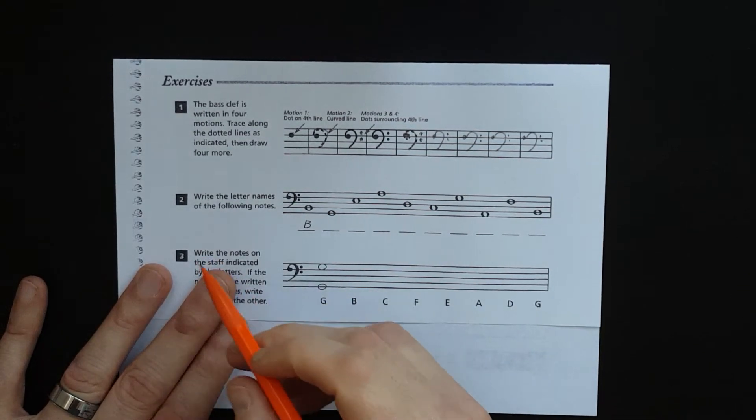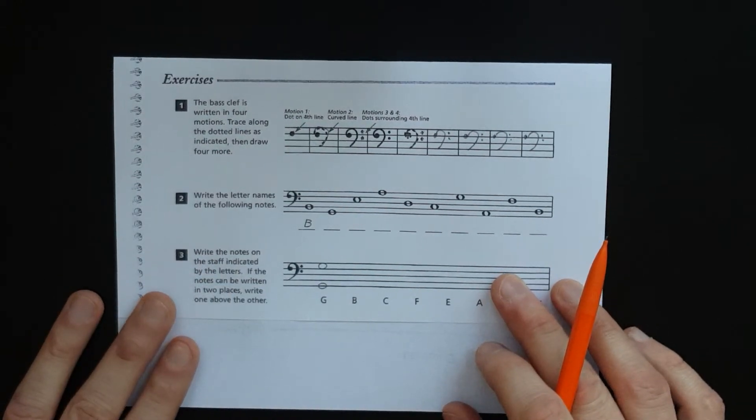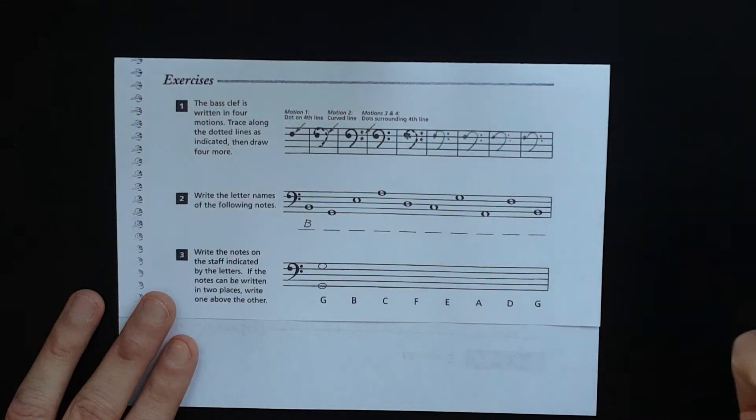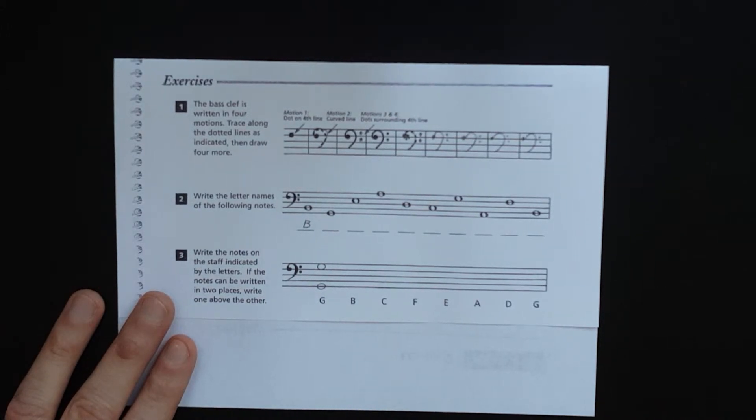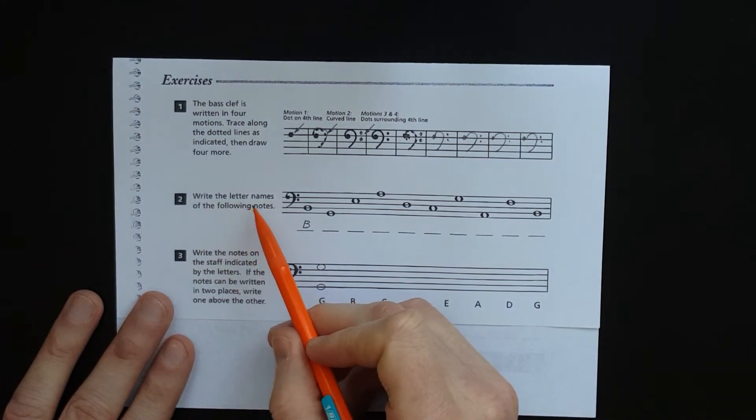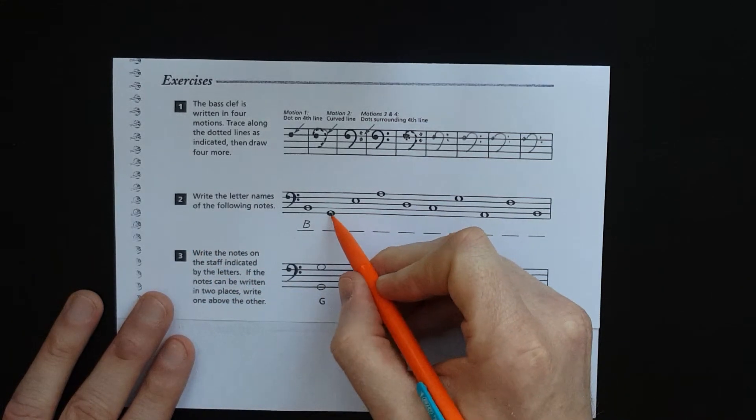Here we are in bass clef figuring out the note names. This is good practice if you're new to reading music—you'll get faster and faster as you go. Write the letter names of the following notes. Make sure you flip your brain to bass clef: Grandma Buys Dresses For All for the lines, All Cows Eat Grass for the spaces.